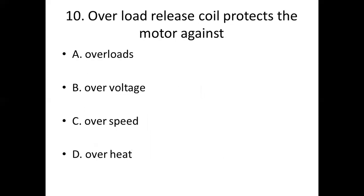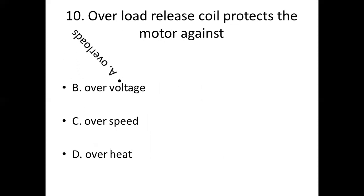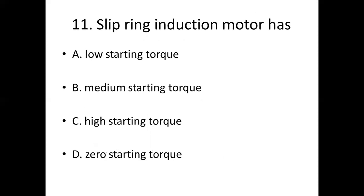Tenth bit. Under voltage release coil protection — the motor trips on. Option A: Lower loads. Option B: Lower voltage. Option C: Lower speed. Option D: Lower heat. Answer: Option A. Lower loads.